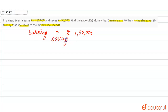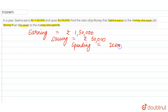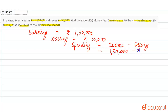Savings equals rupees fifty thousand. Her spending equals income minus savings, which is one lakh fifty thousand minus fifty thousand, so her spending is rupees one lakh.